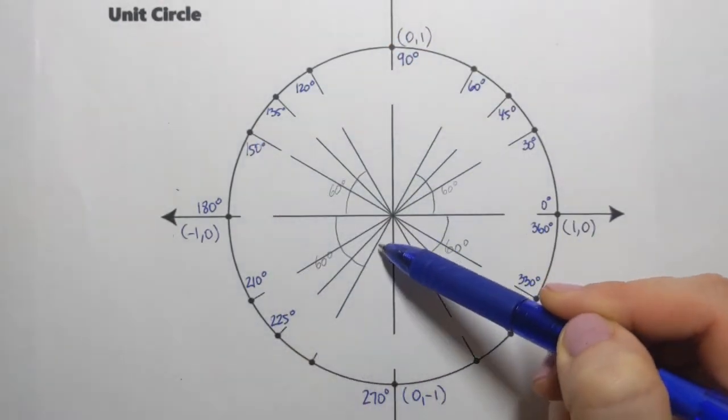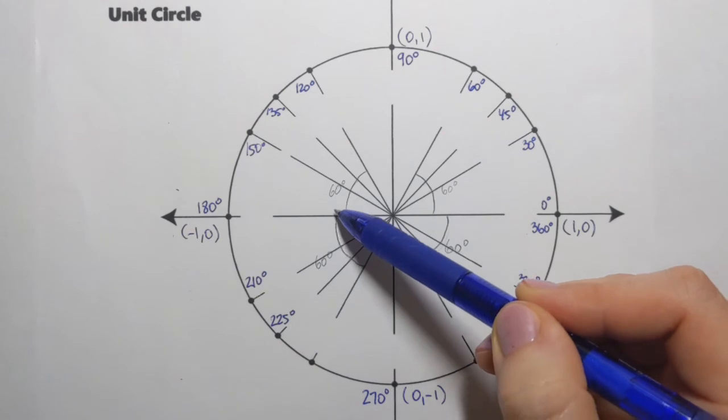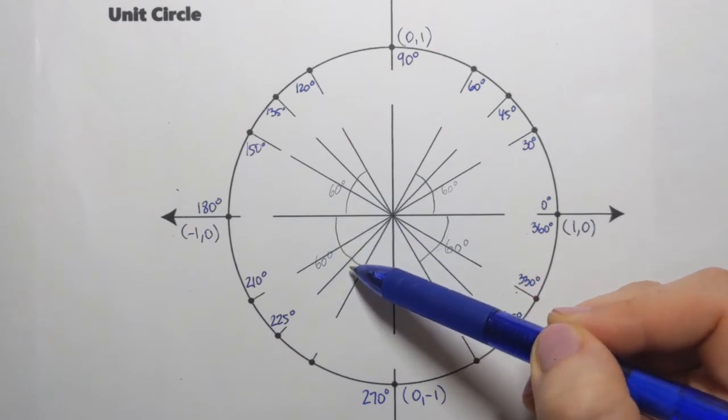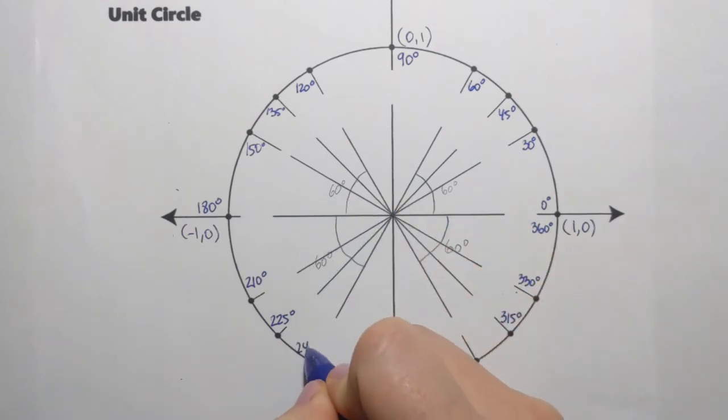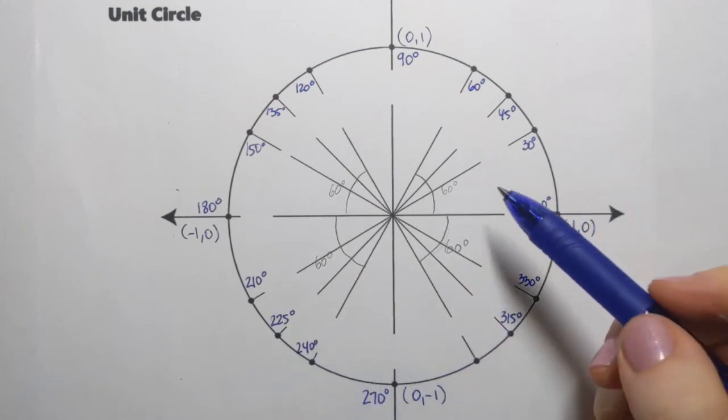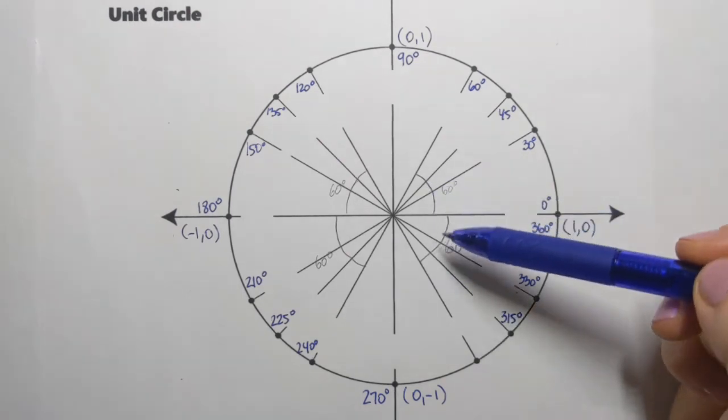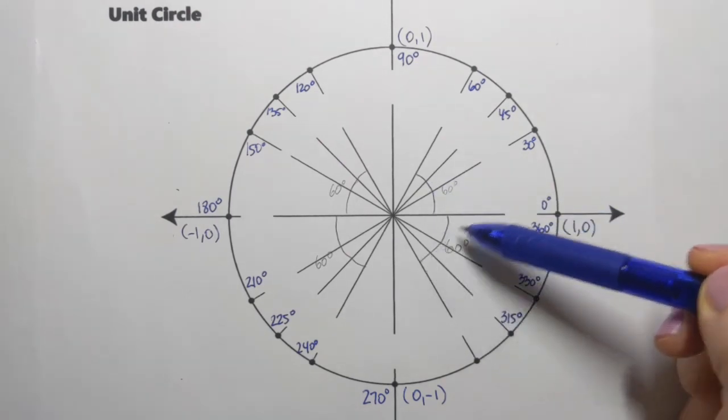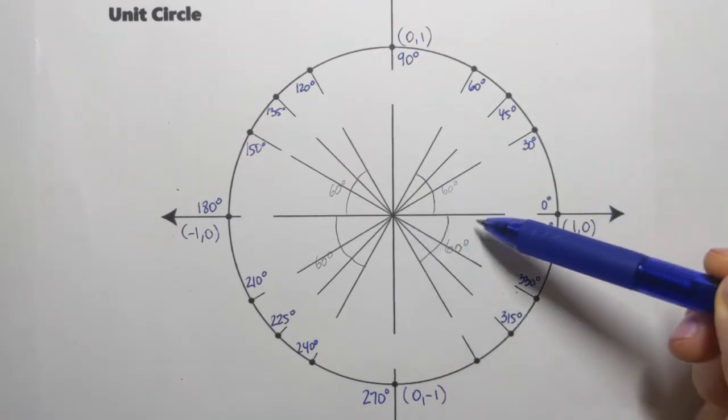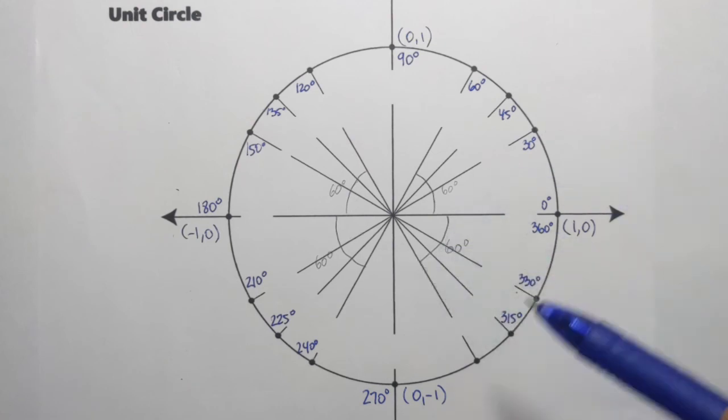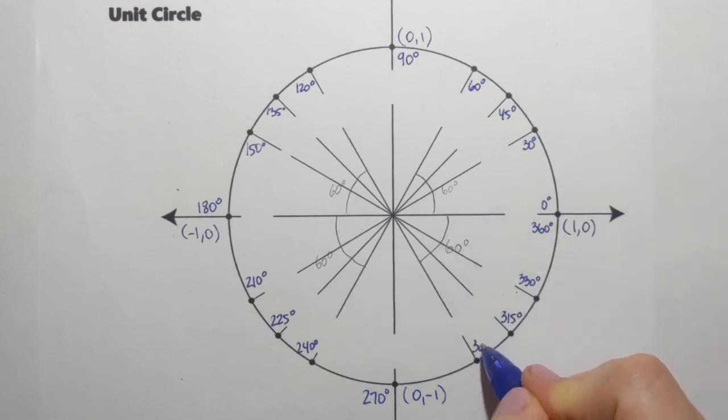In quadrant three, which angle terminates here? I'll take 180 and I add 60. 180 plus 60, 240 degree angle terminates here. And then finally quadrant four. Here's the angle I'm trying to find the measure for. And I can find it by starting with 360 and then taking away 60. So that has to be 300 degrees.